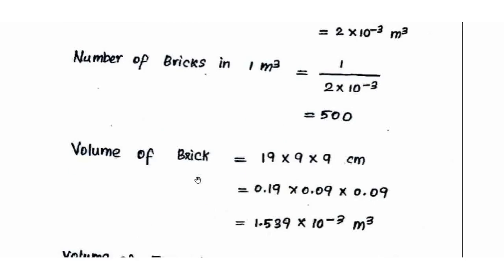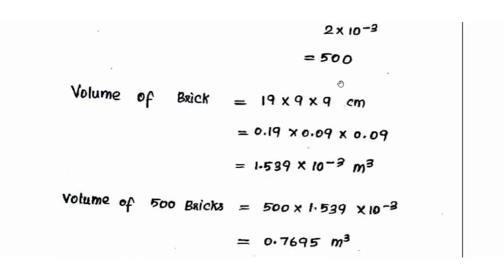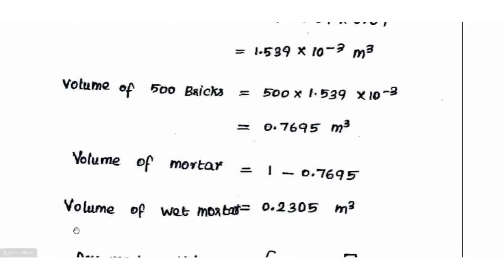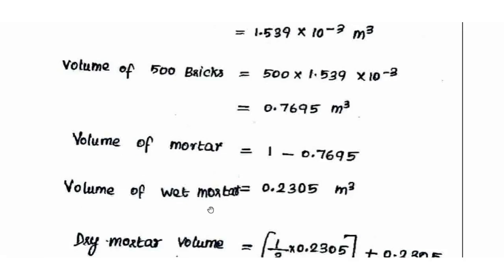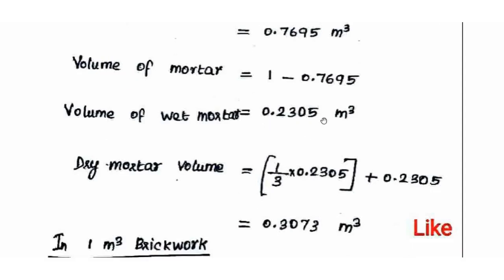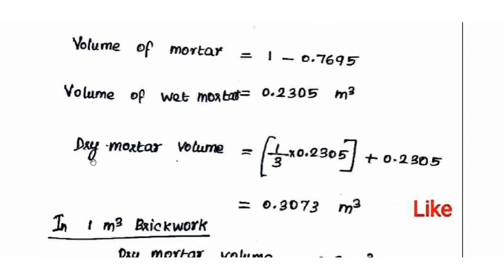The volume of bricks is 19 × 9 × 9 cm = 1.539 × 10⁻³ m³. For about 500 bricks, we calculate 0.795 m³. With a 1.3% increase and 33% increase, dry mortar volume compared to wet mortar increases by 33%. So 1 ÷ 1.33 gives 0.2305; multiplied by 1.33 gives 0.3073 m³.